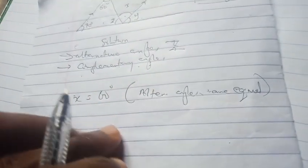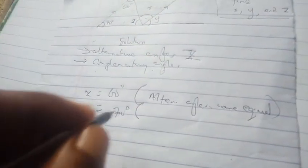Then the next one, Y is equal to 70 degrees. Why? You state your reason: complementary angles. Complementary angles are equal.